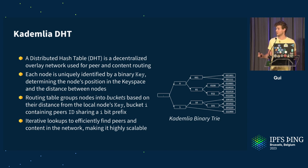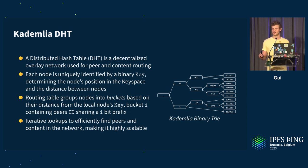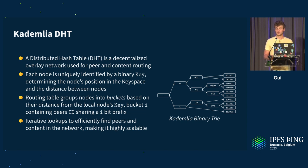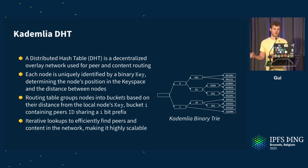Let me introduce the Kademlia DHT in a single slide. A DHT is a decentralized overlay network that is useful to route stuff. In LibP2P or IPFS, we use it for peer routing and content routing.